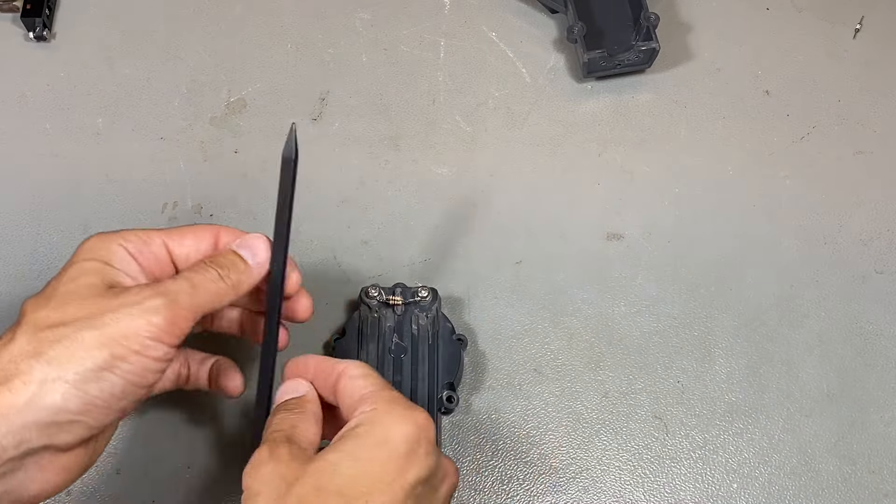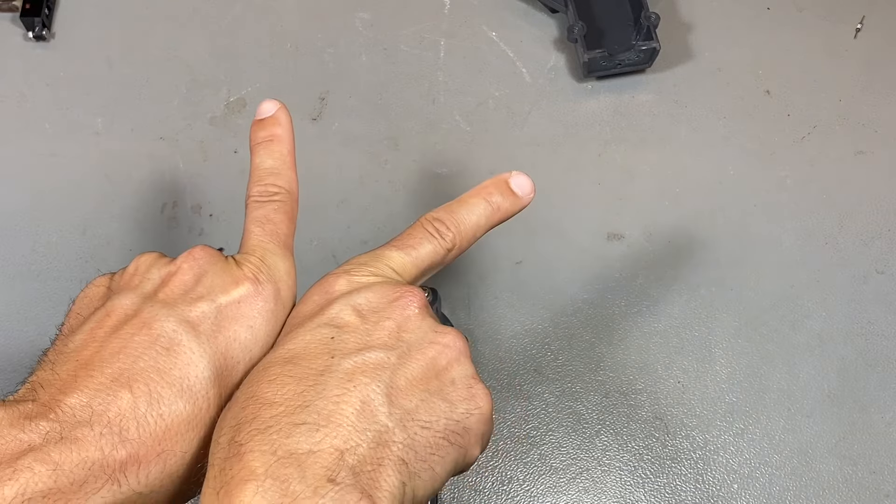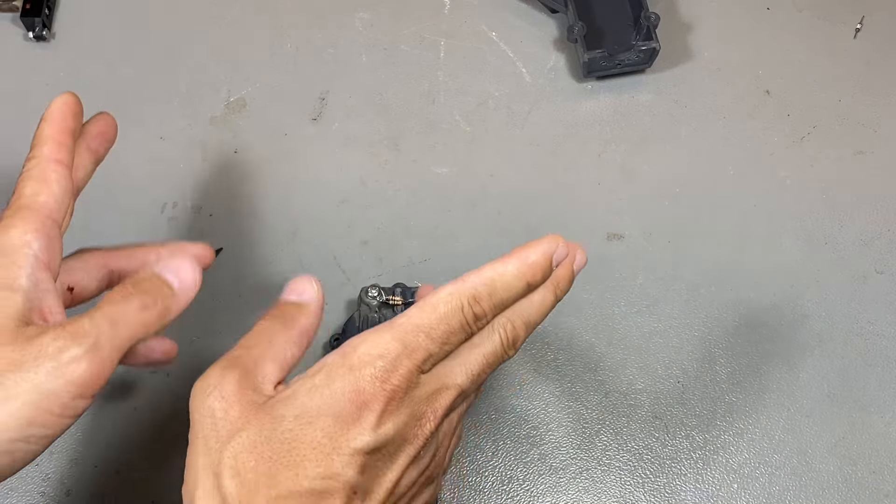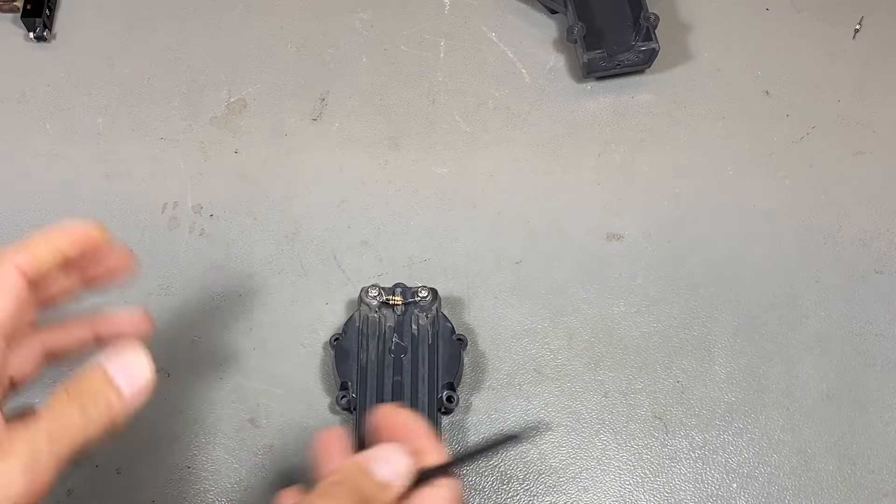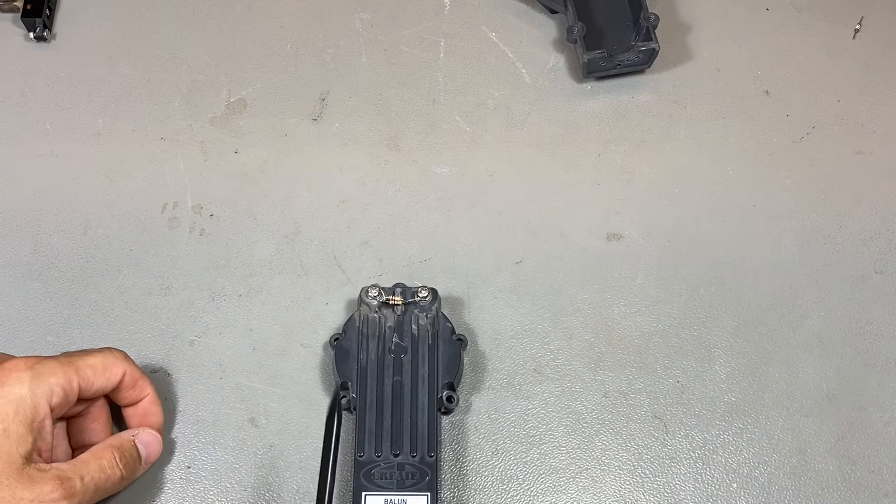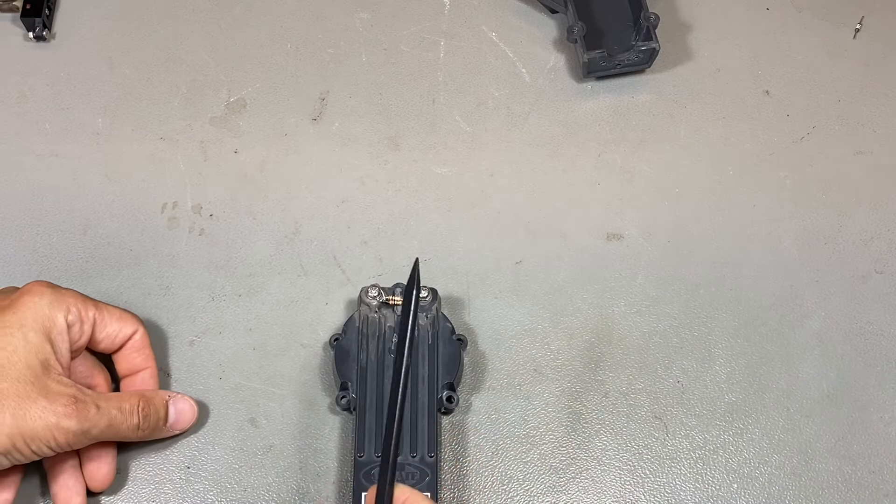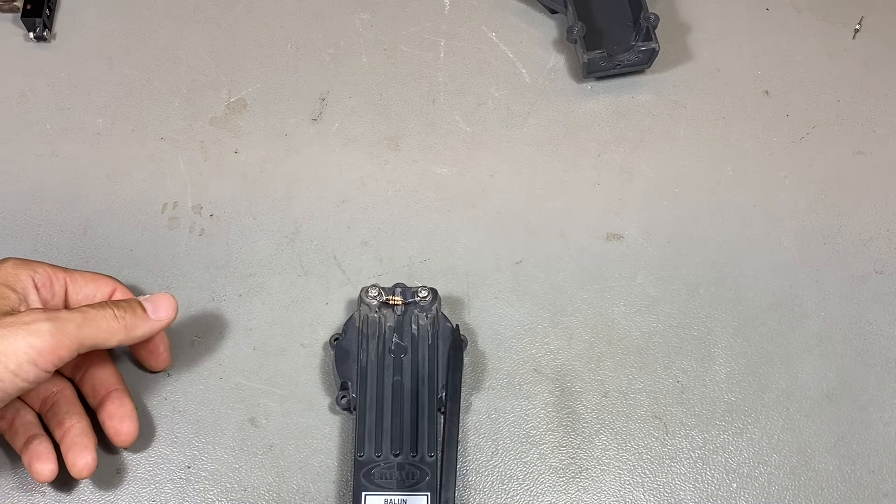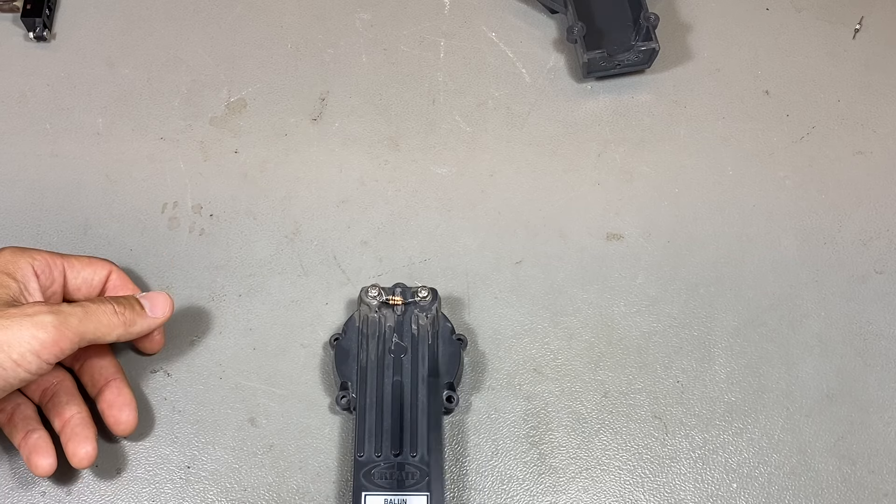So a V-dipole like this, in the form of a V-shape. So it's not horizontal. It should be close to 50 ohms, the impedance at the feed point.